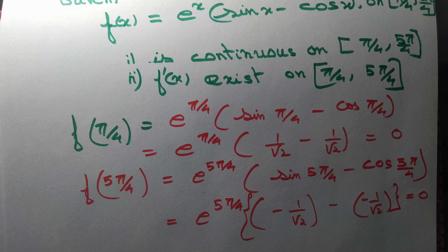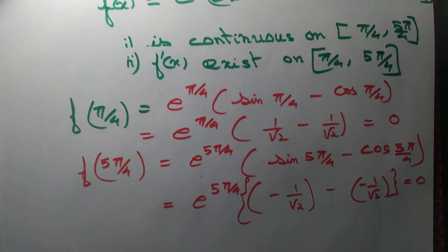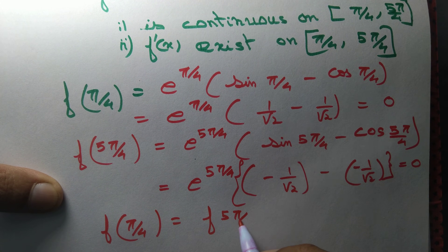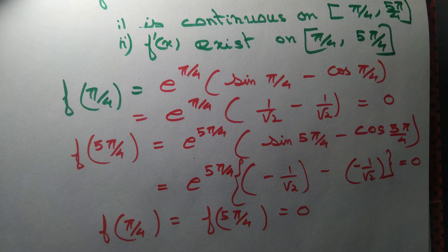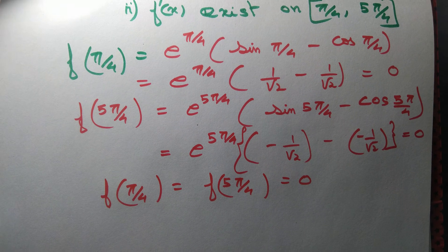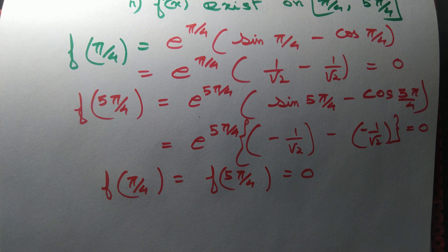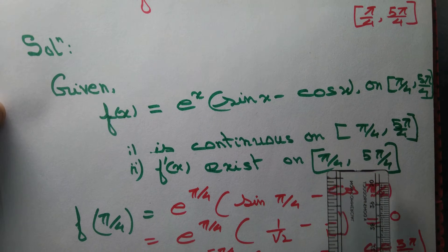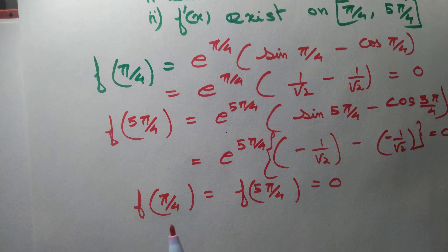In order to verify Rolle's theorem, the value of the function at the endpoints must be equal, and we have f(π/4) = f(5π/4) = 0. The value of the function at the endpoints are equal. We observe that the function is continuous on the closed interval, differentiable on the open interval, and the values at the endpoints are the same.